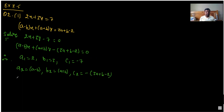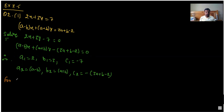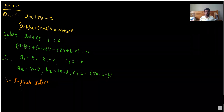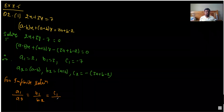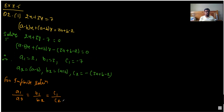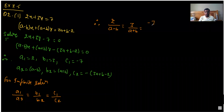It is given that for infinite solutions the condition is A1 upon A2 equal to B1 upon B2 equal to C1 upon C2 — this we had discussed in the last class. So we get 2 upon A minus B equal to 3 upon A plus B equal to minus 7 upon minus of 3A plus B minus 2.